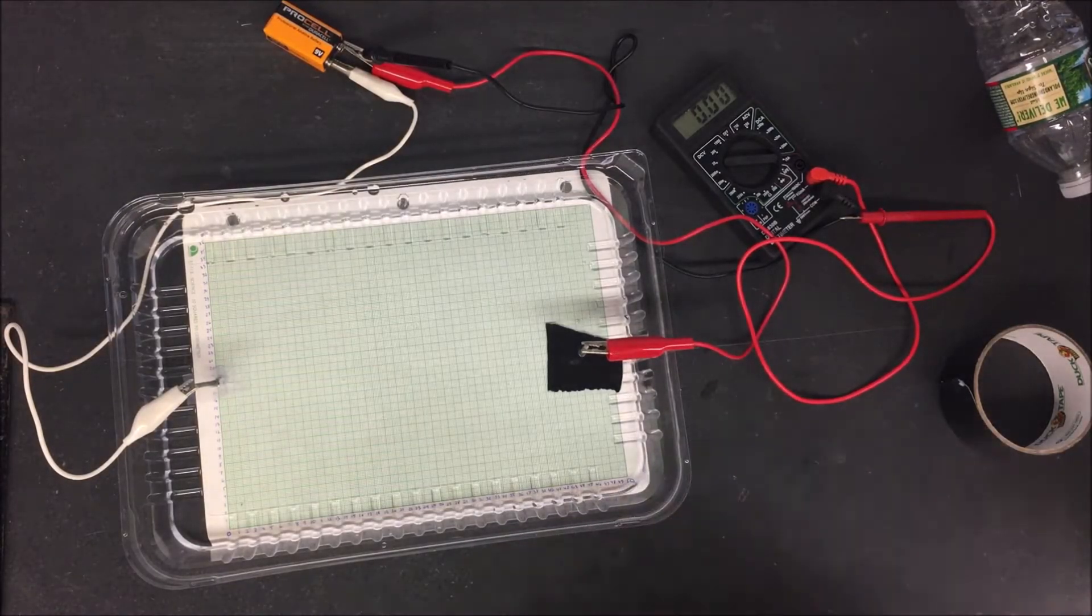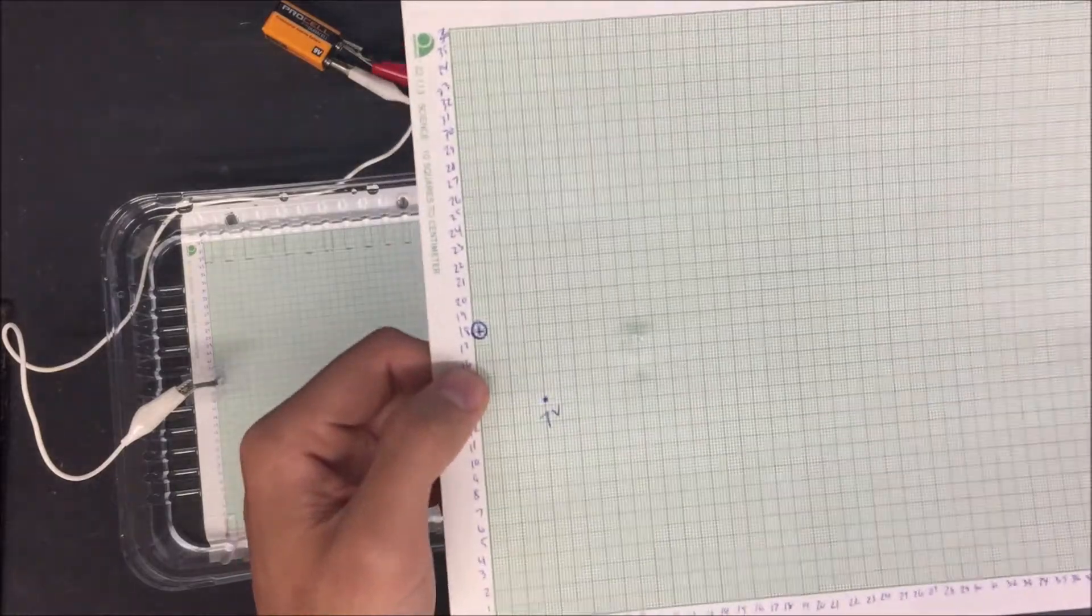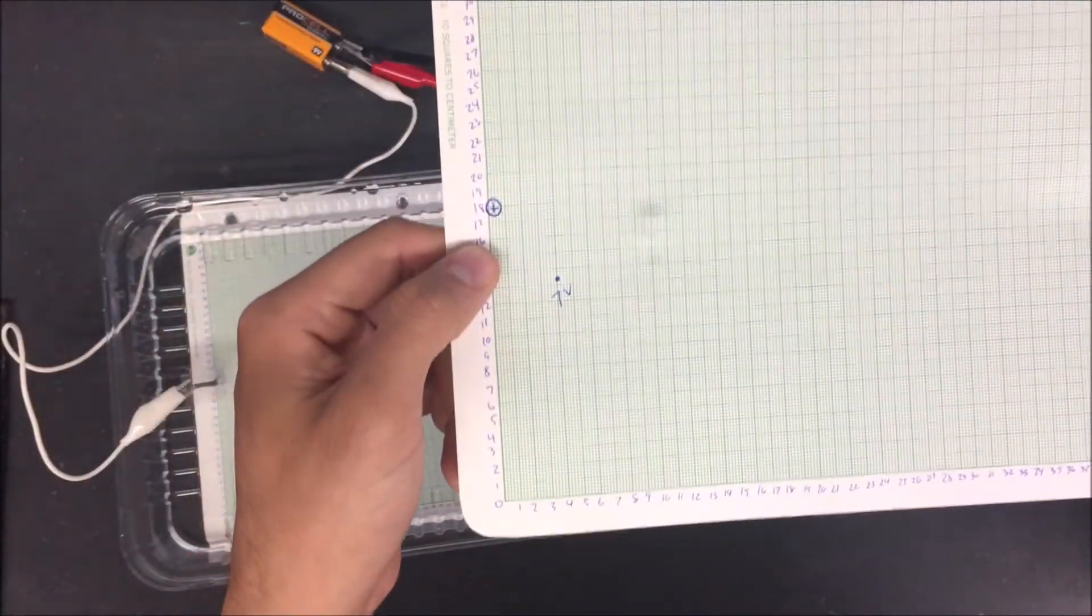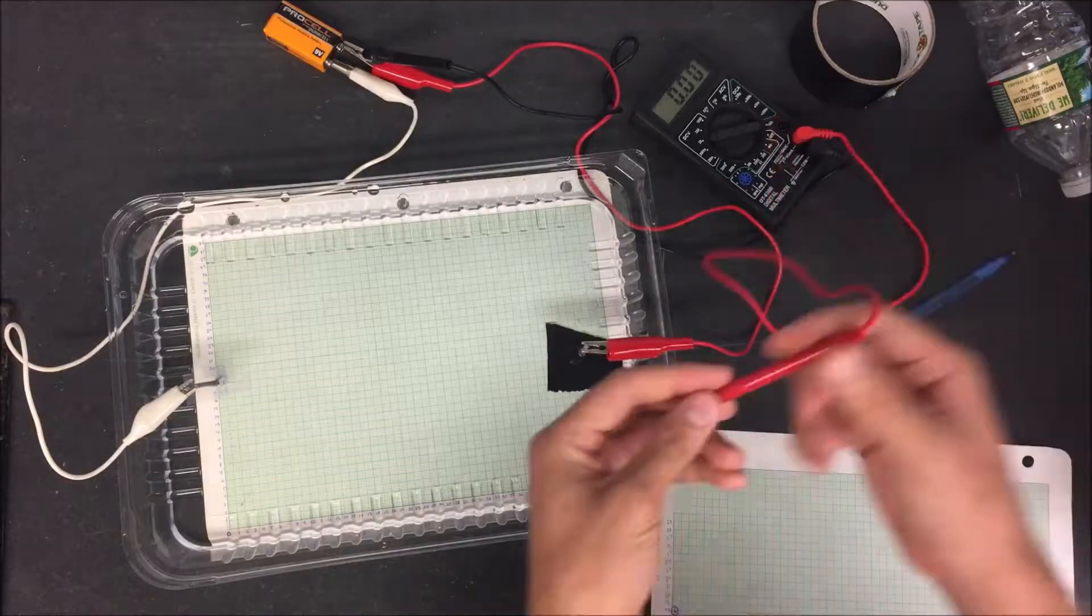Now what you're going to do is you're going to start mapping out your electric field lines. First, you're going to start out with where the positive nail is and the negative nail. And you're going to put that on the graphing paper.